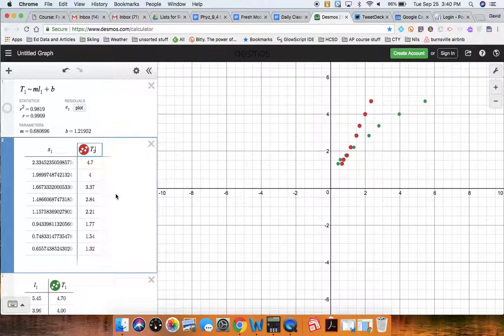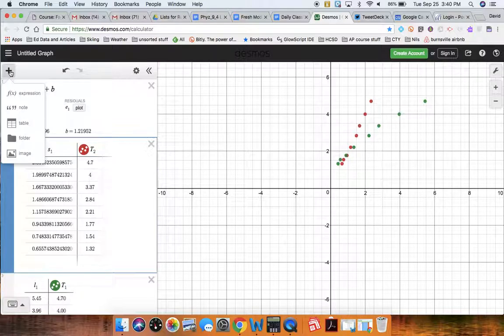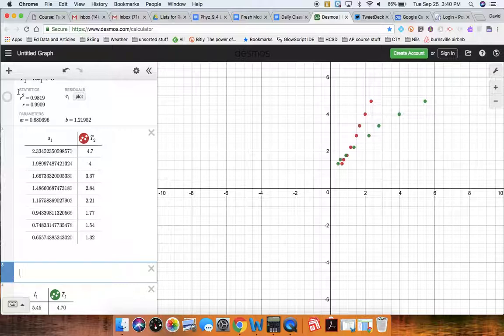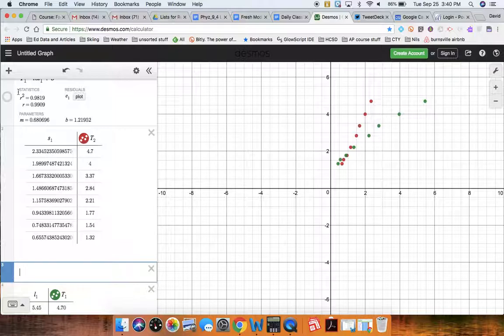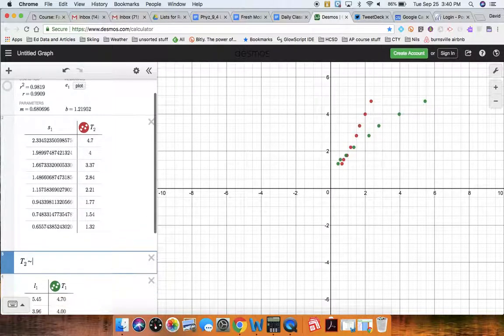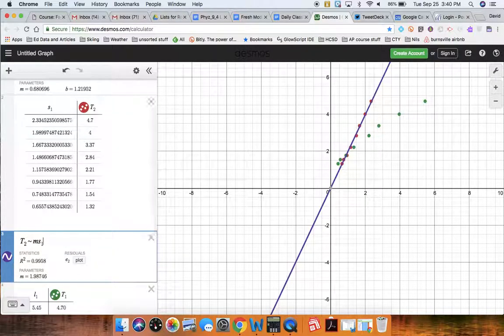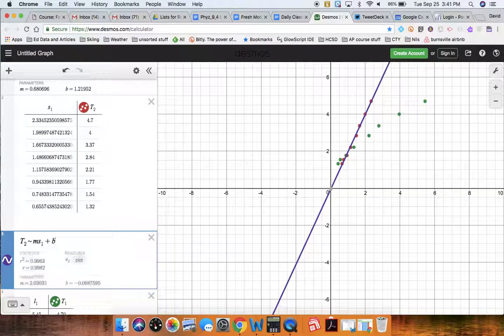And now that I have this information in a table, I can do regression analysis. So I'll click on Expression. And then the vertical axis is T2, so T2, and then tilde, M for slope. S1, the square roots of lengths, that's what's going to go in there for the horizontal axis value, and then plus B.